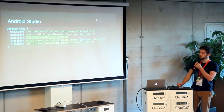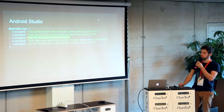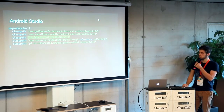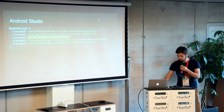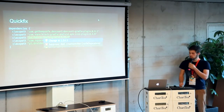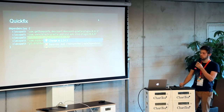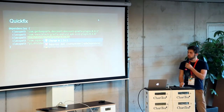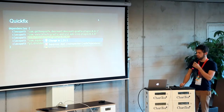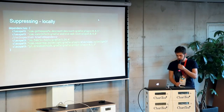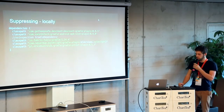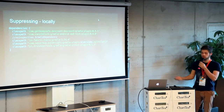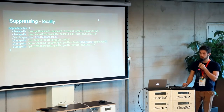Also in Android Studio, if you open the file you'll see that yellow scribble or background - that's basically a warning. You can also alt-enter and then basically change it automatically - that's called the quick fix. Or you can also basically ignore it by using the no inspection, and Lint is going to know that you don't want to have that warning reported.